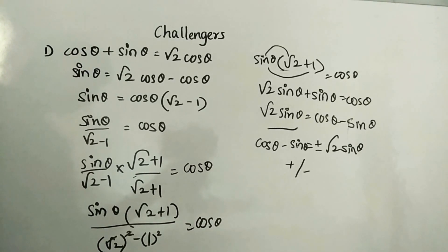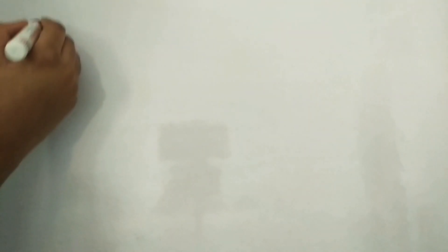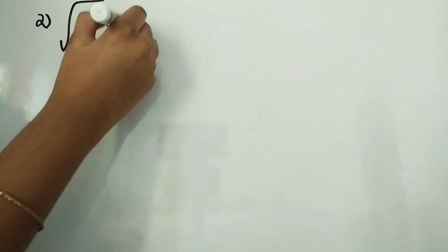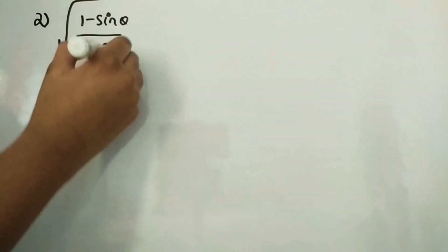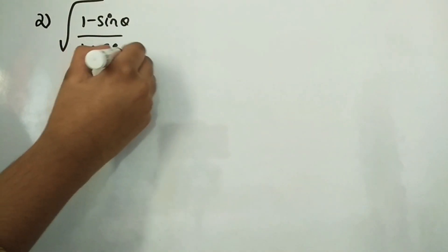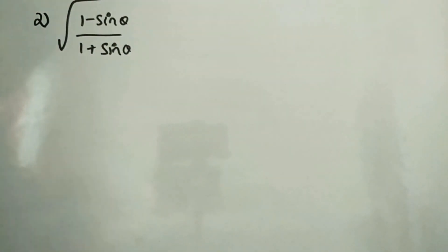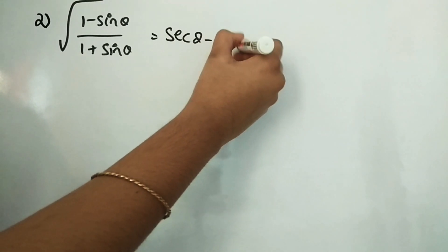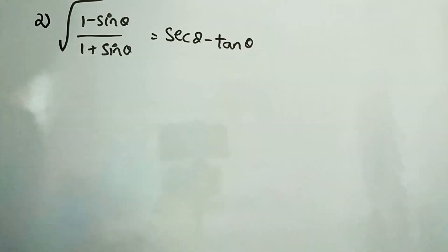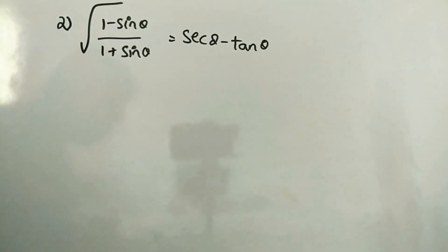Now let's continue with the second question. Prove that √((1 − sin θ)/(1 + sin θ)) = sec θ − tan θ. Let's solve this — it's easy.